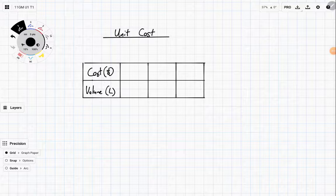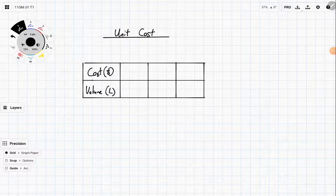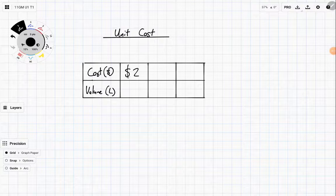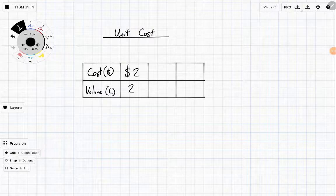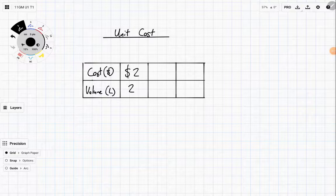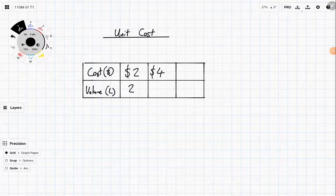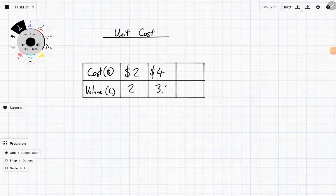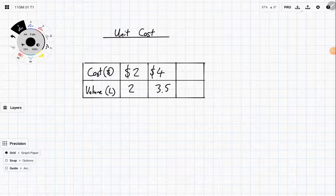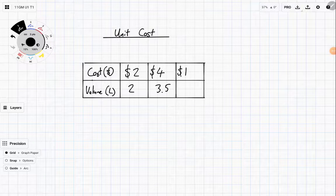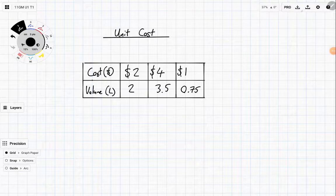So imagine you went to the store and you found a few different bottles of milk. You want to find out which one was the best value. You've got a $2 bottle of milk and it comes with two litres. You've got a $4 bottle of milk and it comes with three and a half litres, and you've got a $1 bottle of milk and it is 0.75 litres.